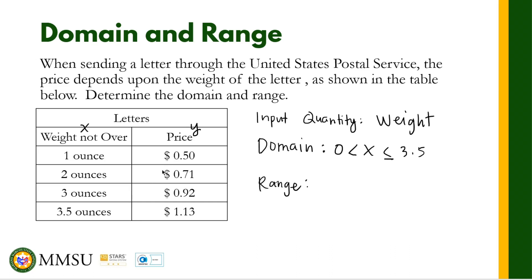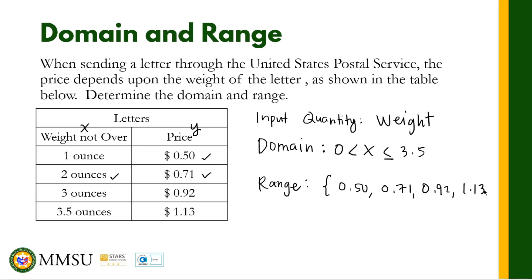Now, how about the range? The range is definite. The price is 0.50 when the input weight is between zero and one ounce. For weight between one and two ounces, the price is 0.71. For two to three ounces, it is 0.92. For three to 3.5 ounces, the price is 1.13. So the output values form a discrete set: {0.50, 0.71, 0.92, 1.13} — the output is not continuous data.